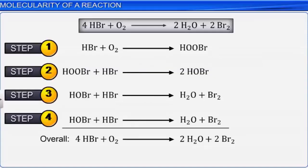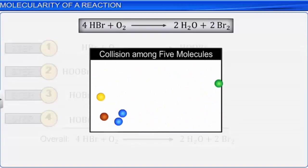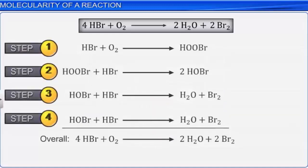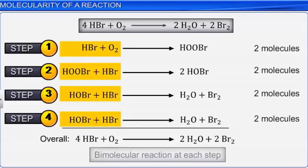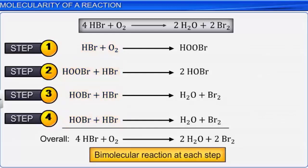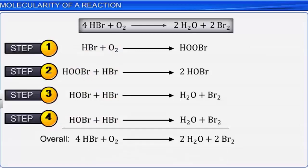Collision theory states that as the number of reacting species increases, the probability of simultaneous collision decreases. The possibility of simultaneous collisions between four molecules is much less than between three molecules. Hence, reactions involving more than three molecules are very rare and the molecularity of a reaction cannot be more than three. Reactions involving more than three molecules take place in several steps and are called complex reactions. Consider the reaction of hydrogen bromide with oxygen, where four molecules of HBr react with one molecule of oxygen. Since it is highly unlikely that five molecules would collide simultaneously, this reaction takes place in several steps, each involving two molecules — making the reaction bimolecular.